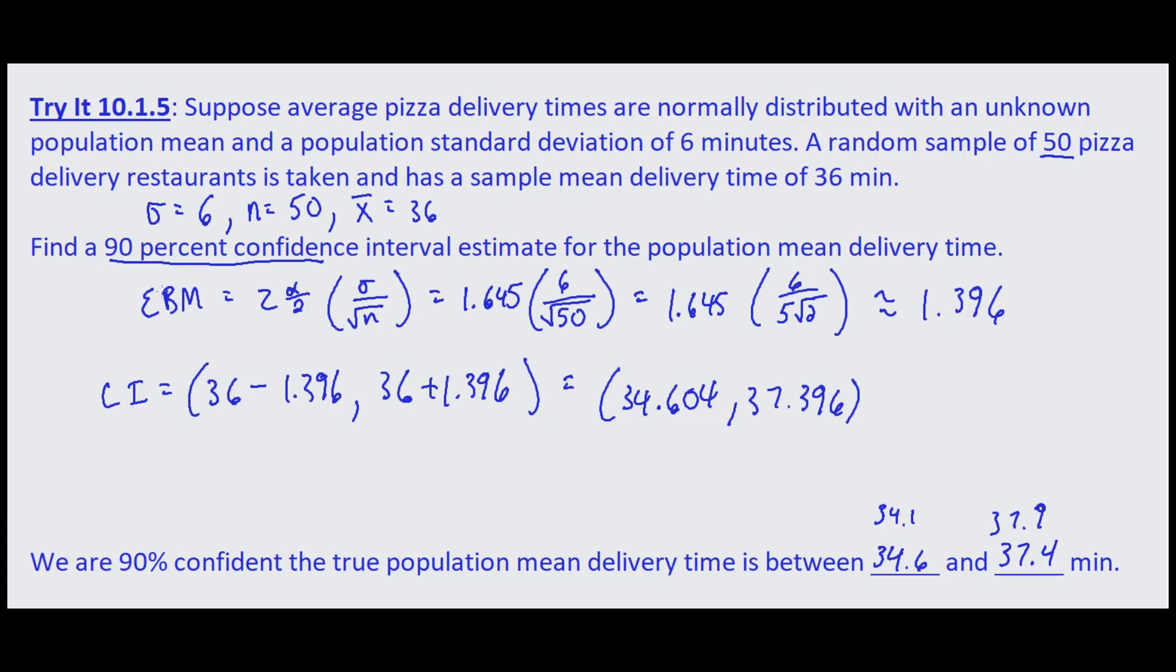And that makes sense because if we look at the error bound, we're dividing by the square root of the sample size. So if we divide by a larger sample size, the square root of a larger sample size, we're going to get a smaller error bound which is going to result in a narrower interval.